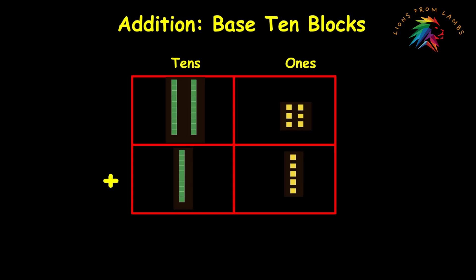We always want to start in addition with the ones place. So when we count up all these units: one, two, three, four, five, six, seven, eight, nine, ten, eleven. And when we count the rods, we have one, two, three. Here's the problem we run into: 26 plus 15 is not 311. So we have to figure out a different way to solve this problem.